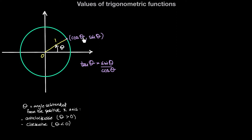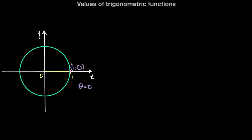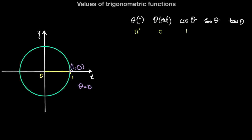In this video we're going to learn about some of the common values of theta and the values that these trigonometric functions take for those values. When theta is 0 degrees or 0 radians, the radius lies on the positive x-axis. The x-coordinate of the point on the unit circle is 1 and the y-coordinate is 0. So cosine of theta is 1, sine of theta is 0, and tan theta — which is sine over cosine — is also equal to 0.